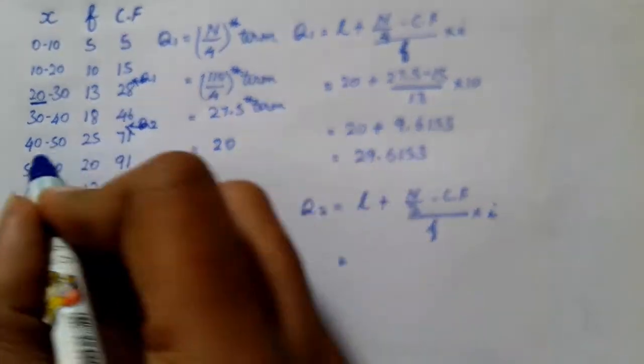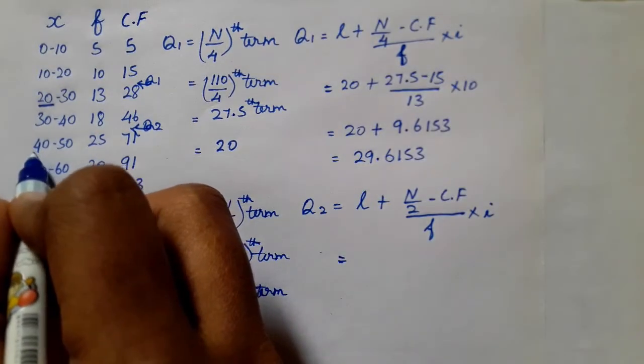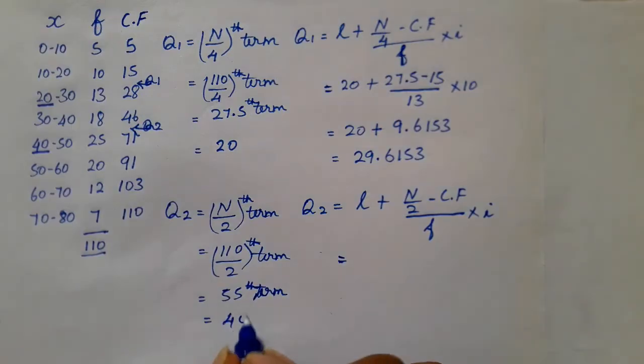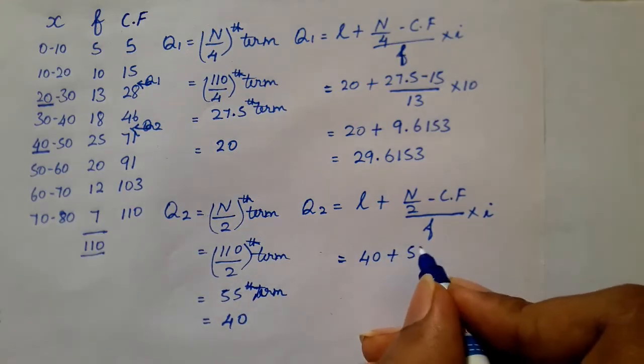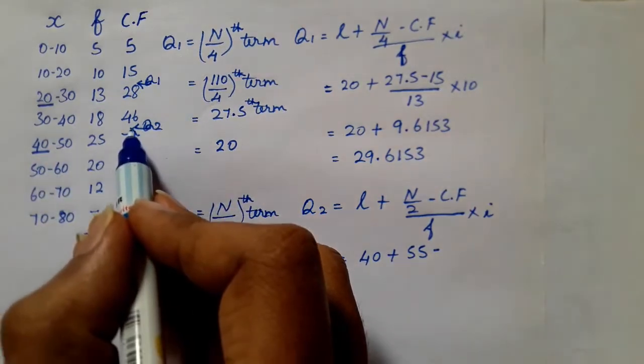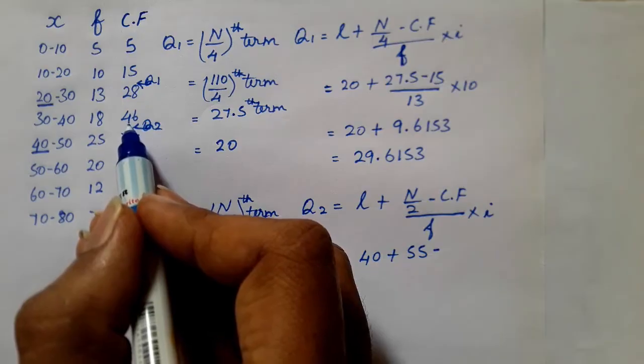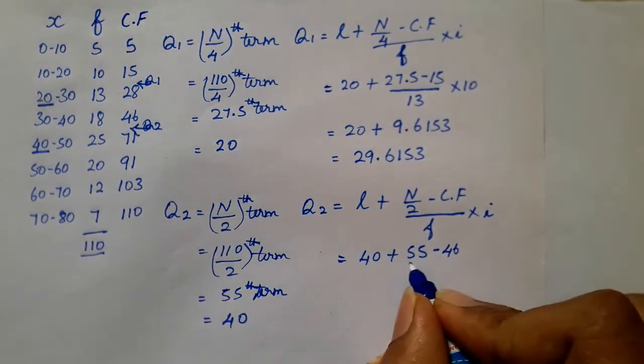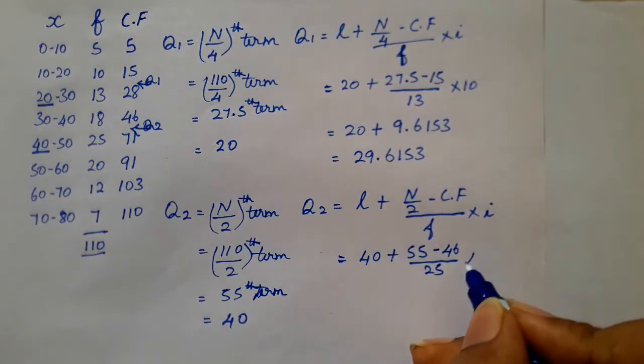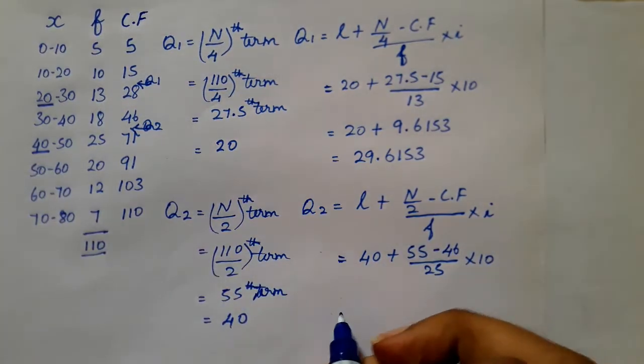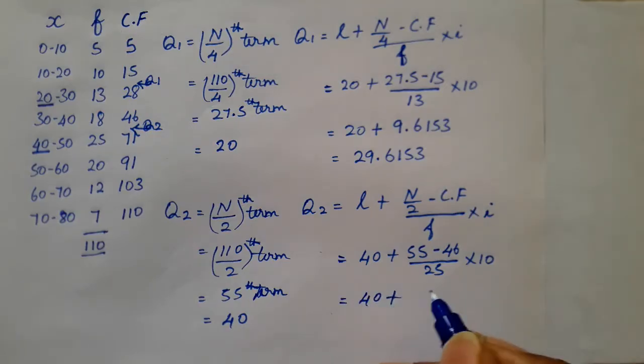So next row we can see q2, so next row here at 71. So in this column, look at the lower 4, here at 40. In the row is 15 to 55, already at that 25. So 40 plus 55 minus 46 divided by 25 into 10, so 3.6. Now add 43.6.